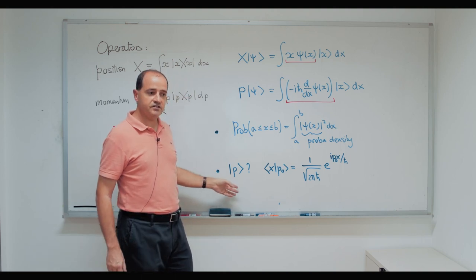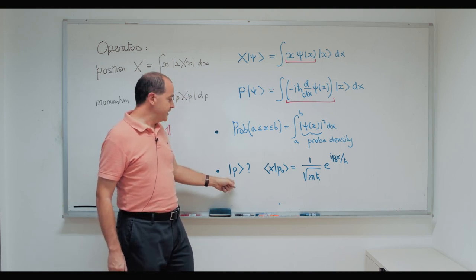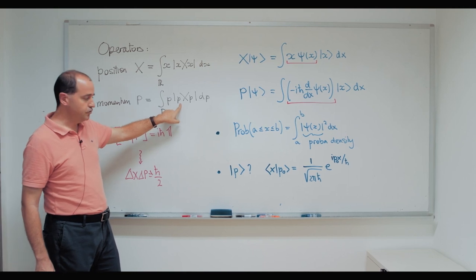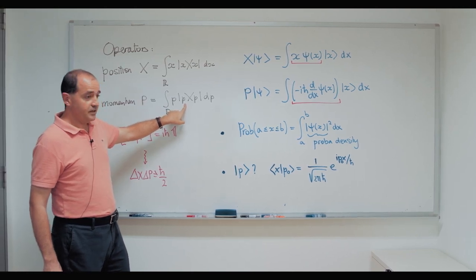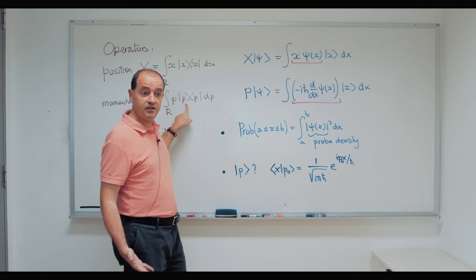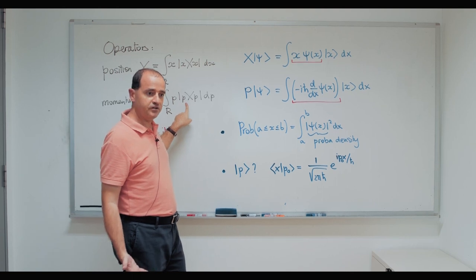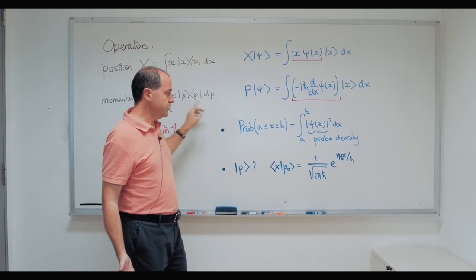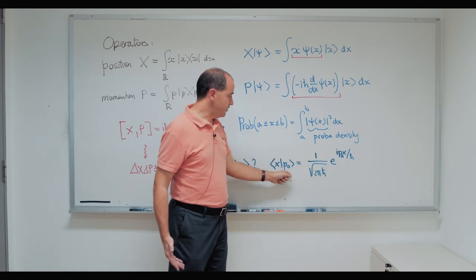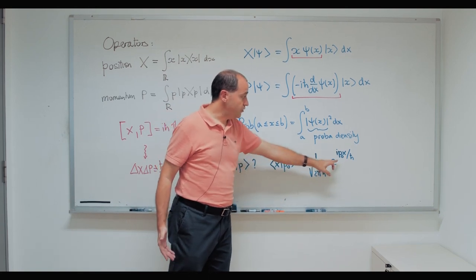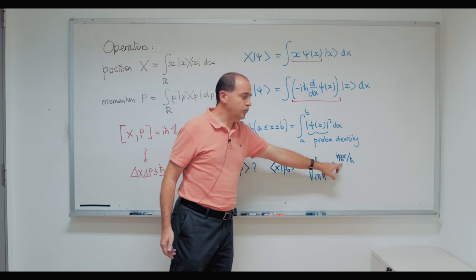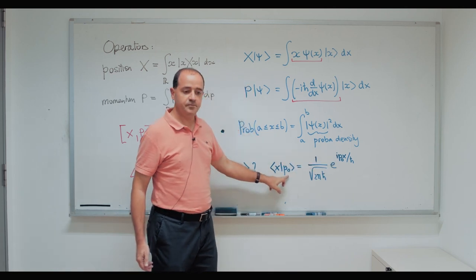Another thing to highlight is what are the eigenstates — or pseudo-eigenstates — of momentum. Again, they are non-normalizable functions like for position, so they are not proper vectors, but their wave function is a plane wave with a wave vector defined essentially by the momentum that is described.